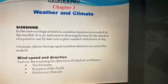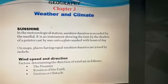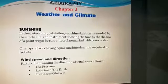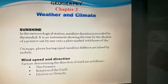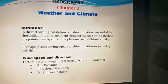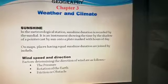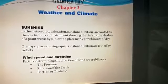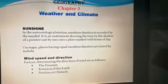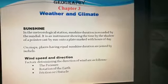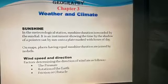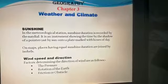Sunshine. In a meteorological station, sunshine duration is recorded by the sundial. It is an instrument showing the time by the shadow of a pointer cast by the sun onto a plate marked with hours of the day. It was the earliest type of timekeeping device — it tells the time of day by the position of the shadow of some object. When exposed to sun rays, it forms a shadow, and the sundial tells the time of day by the shadow of that object.